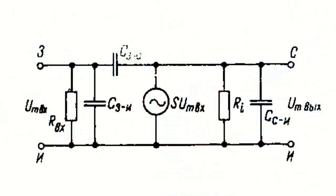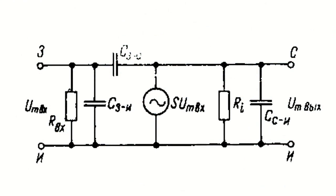This chart shows the equivalent circuit of the field effect transistor for common source wiring. Since RIN is very large, it can be ignored. For low frequencies, in many cases, capacitances can be excluded from the circuit. The current generator reflects the gain given by the transistor, and the resistance RI represents the resistance of the channel to alternating current — the output resistance.